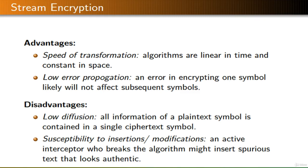Let's consider the advantages and disadvantages of stream ciphers. One advantage is the speed of transformation — algorithms are linear in time and constant in space. Another advantage is low error propagation; an error in encrypting one symbol likely will not affect subsequent symbols. A disadvantage is low diffusion, where all information of a plaintext symbol is contained in a single ciphertext symbol. Another disadvantage is susceptibility to insertions or modifications — an active interceptor who breaks the algorithm might insert spurious text that looks authentic.